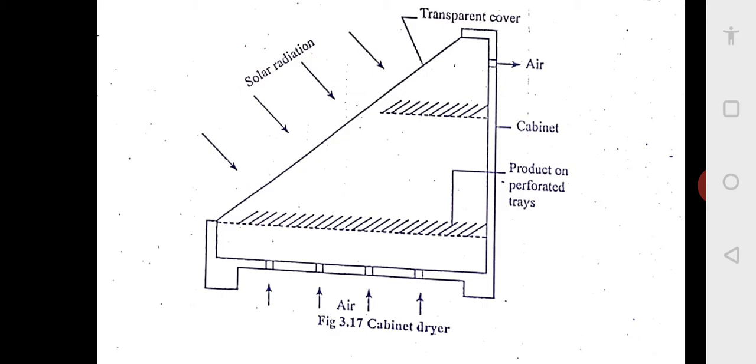Here basically, two ways: one is the solar heat directly falling onto the agriculture produce, and second, the solar heat is heating the air, and that air is taking, due to convection, that air is taking away the heat from this agriculture produce, and it is drying the produce like chilies, raisins, dry fruits, and it is going from the top.